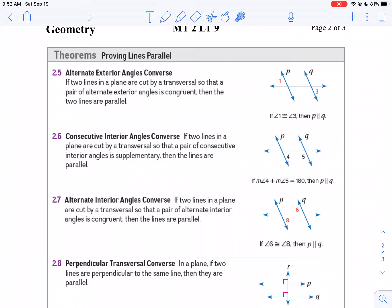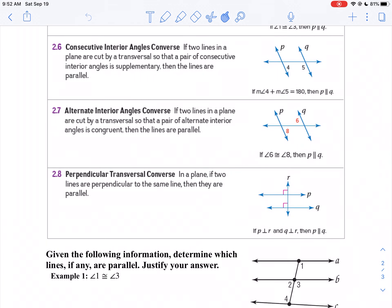And the perpendicular transversal theorem says, if you have two lines that are perpendicular to the same line, then those two lines are parallel.